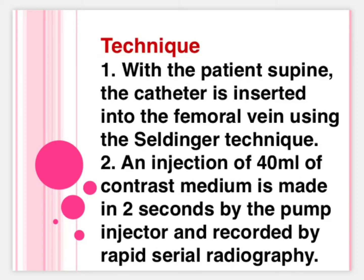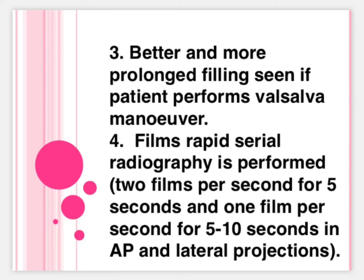Technique: 1. With the patient supine, the catheter is inserted into the femoral vein using the Seldinger Technique. 2. An injection of 40 ml of contrast medium is made in 2 seconds by the pump injector and recorded by rapid serial radiography. 3. Better and more prolonged filling is seen if the patient performs the Valsalva manoeuvre. 4. Films — rapid serial radiography is performed at 2 films per second for 5 seconds, and 1 film per second for 5 to 10 seconds, in AP and lateral projections.